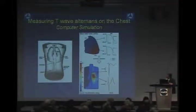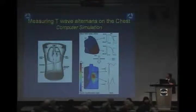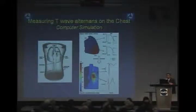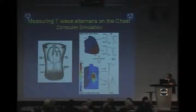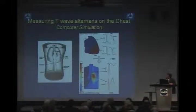The red areas represent very large amplitude alternans, which then get smaller and smaller. This was very important information because it told us that if we are looking for this tiny signal, we have to look for it in a very specific area on the chest, not just anywhere.